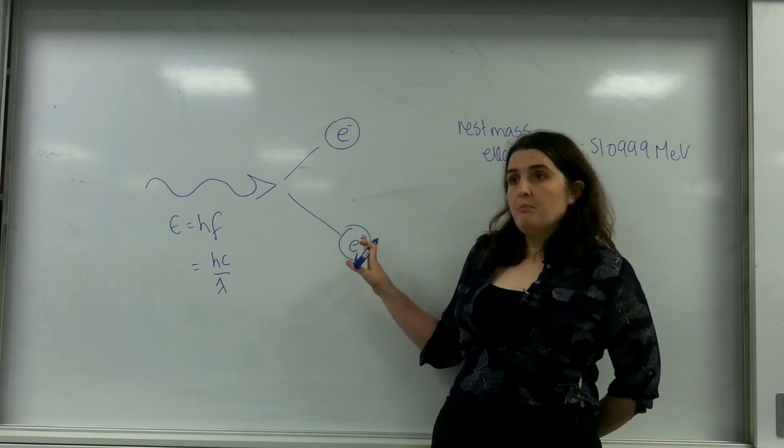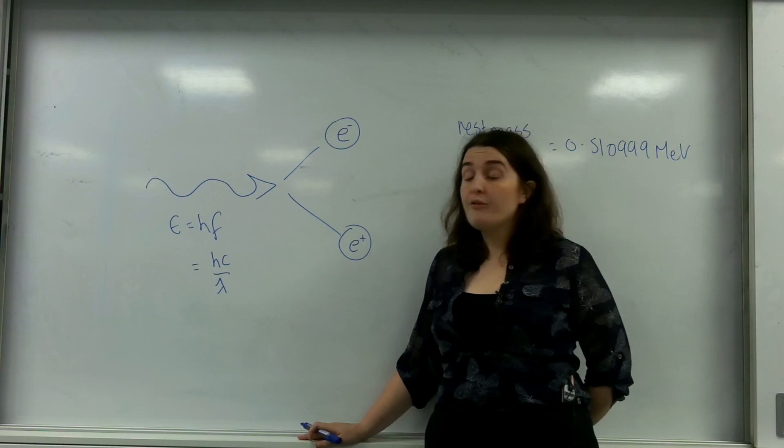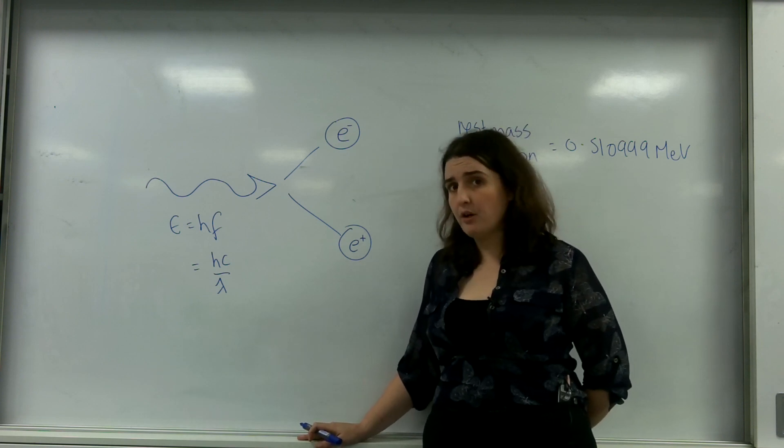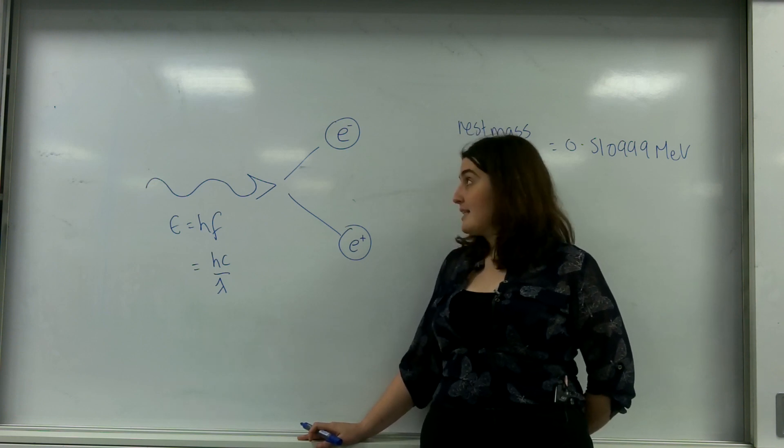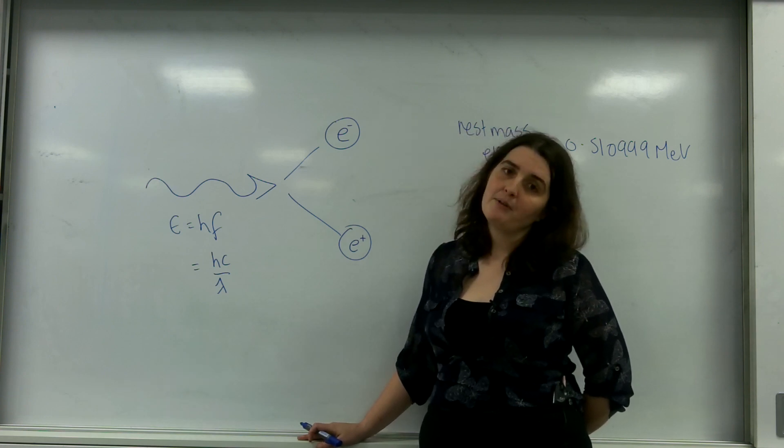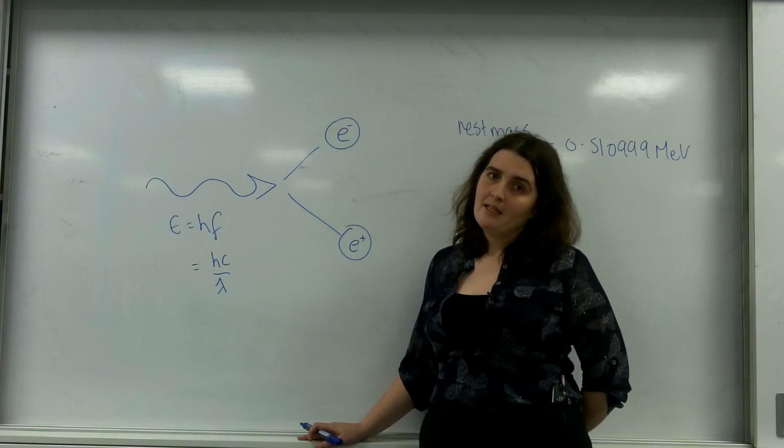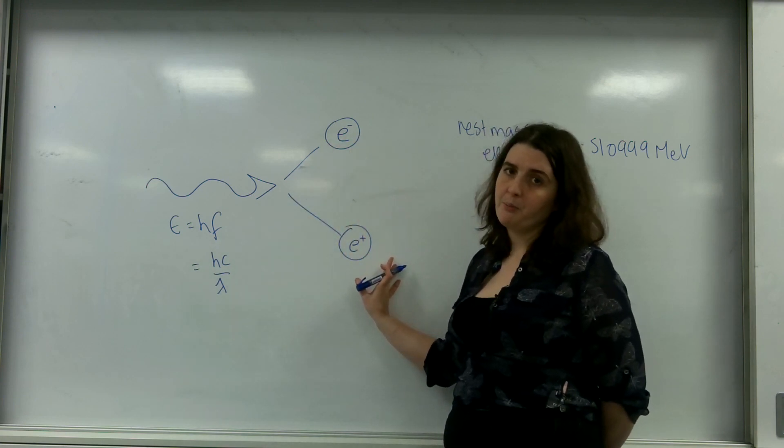The reason that you must have a particle and an antiparticle is to conserve charge. Photons don't have charge. But when they're creating objects like protons or in this case an electron, to conserve charge there must be an antiparticle being emitted. So you always have pair production with a particle and an antiparticle made.